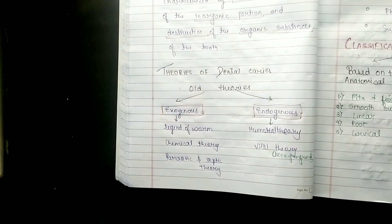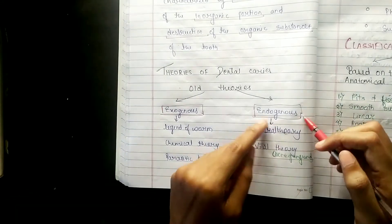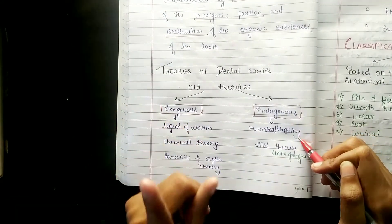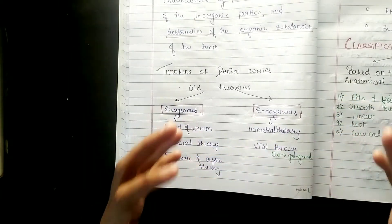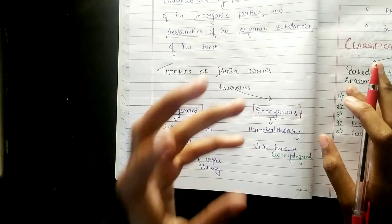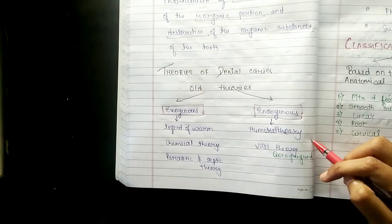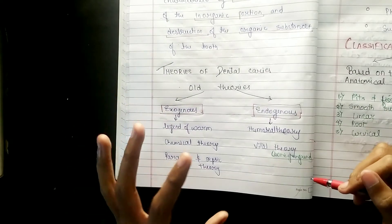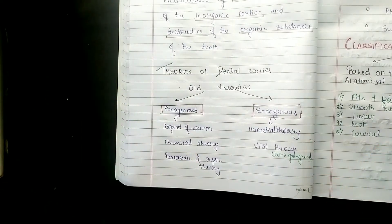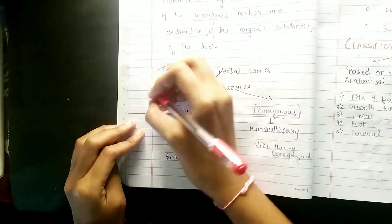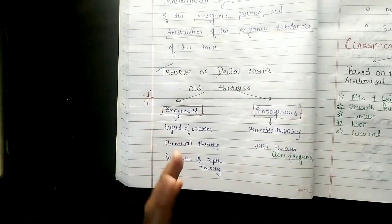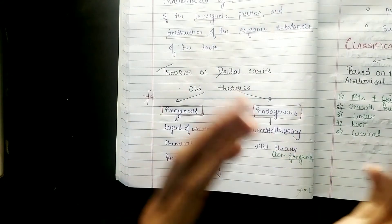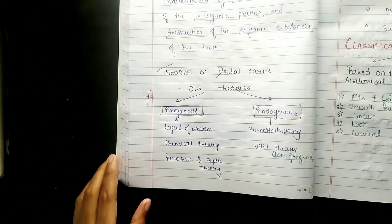Now endogenous, which is what is happening in your body. Endogenous is humoral theory first. Humoral theory is that your blood which is made by RBC and WBC, so this happens. Obviously it is not acceptable. Vital theory, what is happening in the pulp, and gangrene. Of course, all these theories are not accepted, but yes, you can see it for your information and examination.